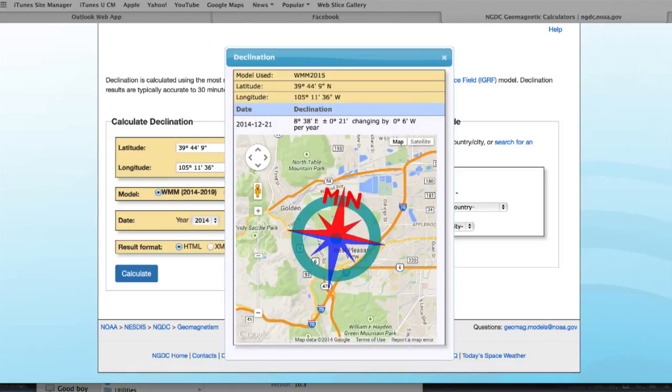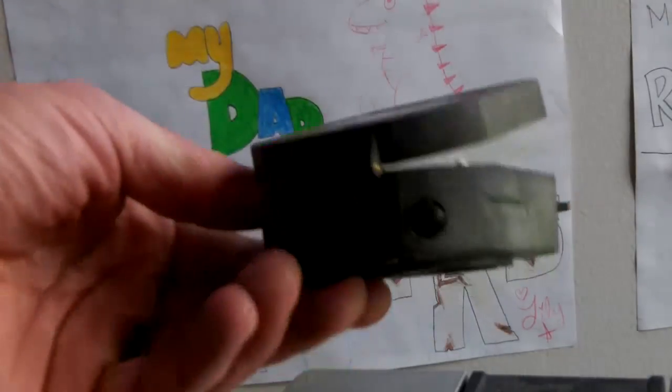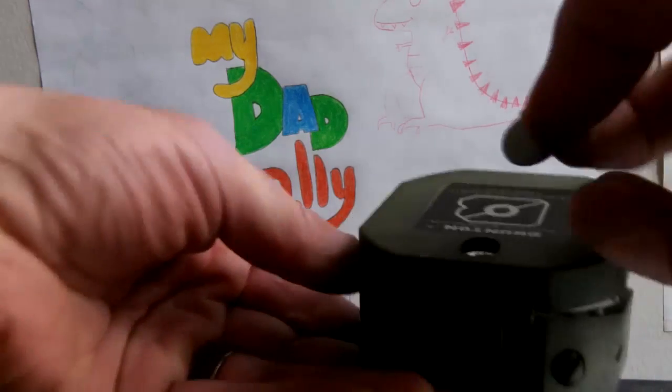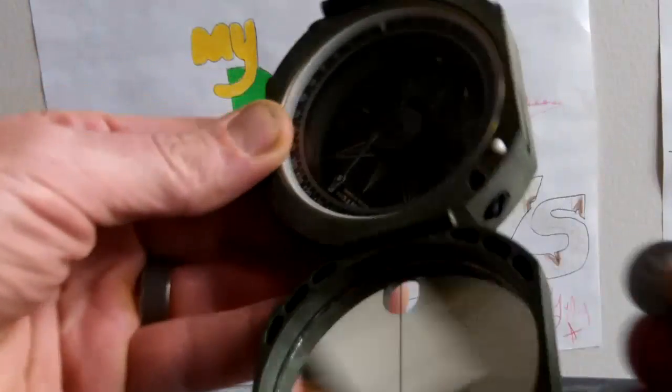But now that we have our declination, we can correct our compasses. Every decent compass has some way to offset the compass dial from the magnetic indicators. In our course we use this type of compass, and on its cord is a small screwdriver you can use to turn this small inset dial on the back.